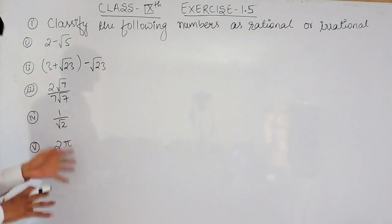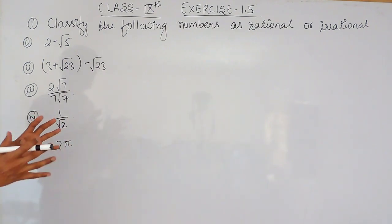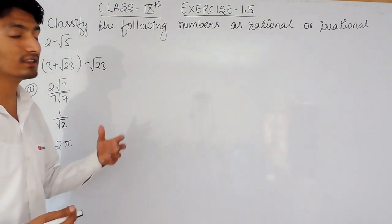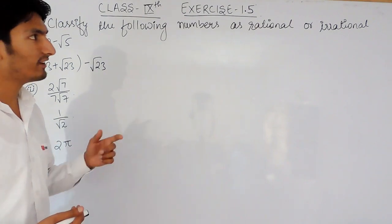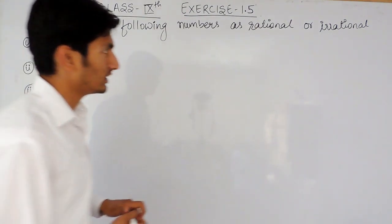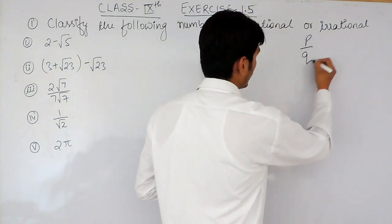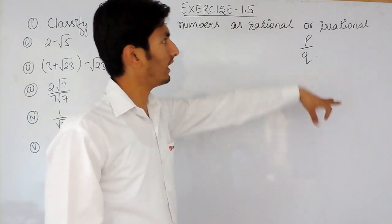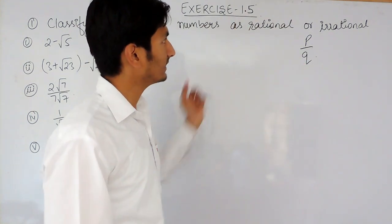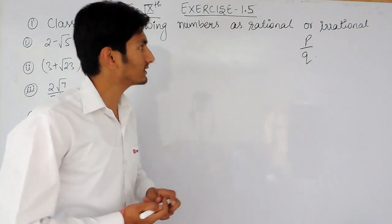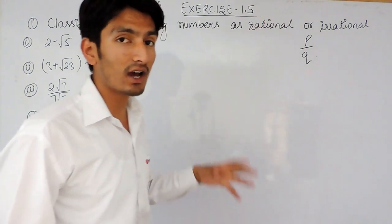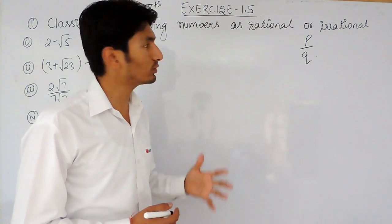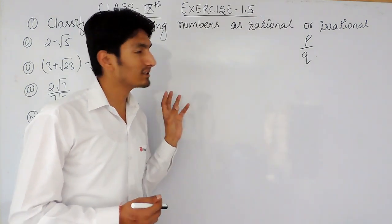I hope you already know what rational and irrational numbers are. Rational numbers are basically those numbers which can be written in the form of p upon q, where p and q are integers and q must not be equal to 0. These are known as rational numbers, and all others are irrational. There is another definition: rational numbers are fractions, and fractions are decimals. Decimals are of three types.